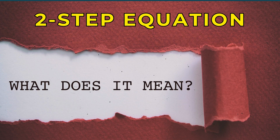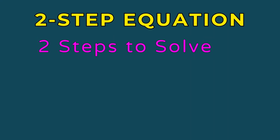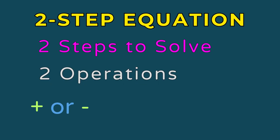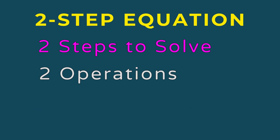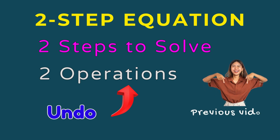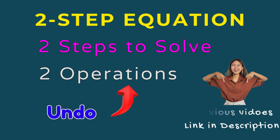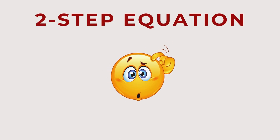What's a two-step equation? It's exactly what it sounds like — an equation that requires two steps to solve. These equations typically involve two operations, like addition or subtraction, and multiplication or division. In other words, to get the unknown all by itself, you'll need to undo two operations. In previous videos, we learned how to undo any single arithmetic operation, but two-step equation solving is a bit trickier.